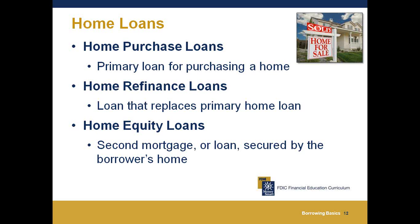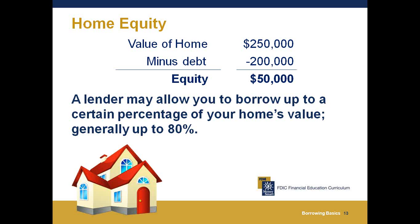A home equity loan allows you to borrow money secured by your home — also considered a second mortgage. Equity is the value of the home minus the debt you owe. For example, if your home is worth $250,000 and you owe $200,000, your equity is $50,000. A lender may allow you to borrow up to 80% of your home's value. Remember, any type of home loan is secured by your house, and if not repaid, you could lose your home.